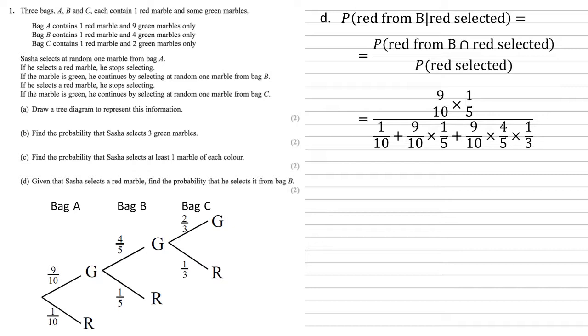Again, just working our way along those branches. Adding all those together on the bottom, so we get 9 over 50, all over 13 over 25, which gives us an answer of 9 over 26.